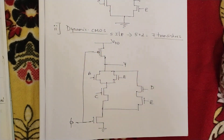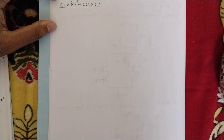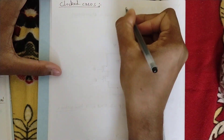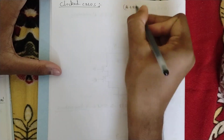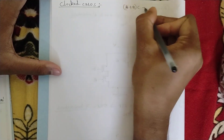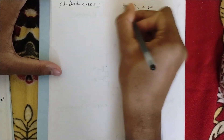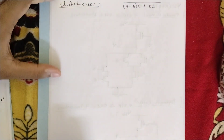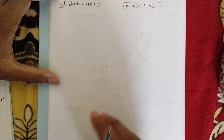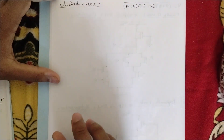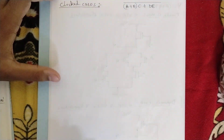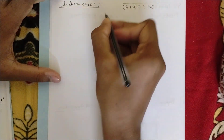Now let us draw this using clocked CMOS logic. The same expression: (a+b)·c + d·e. Clocked CMOS is the same as complementary CMOS, but between the outputs it should be adding one clocked signal — that is one PMOS and one NMOS transistor.